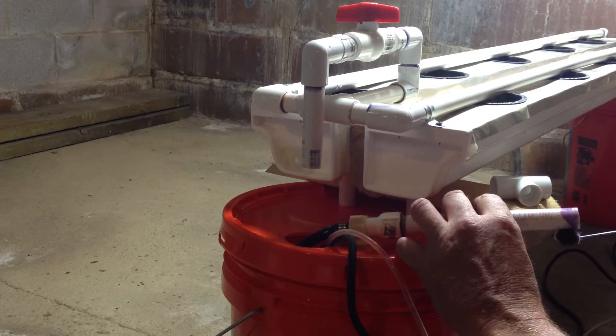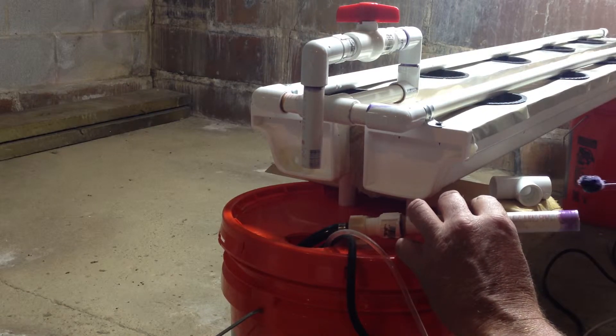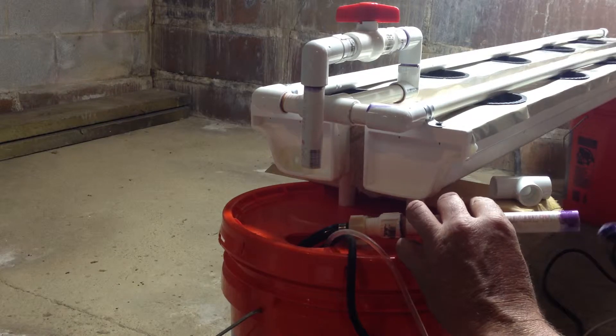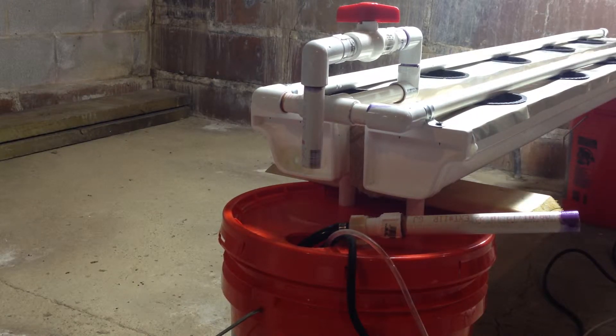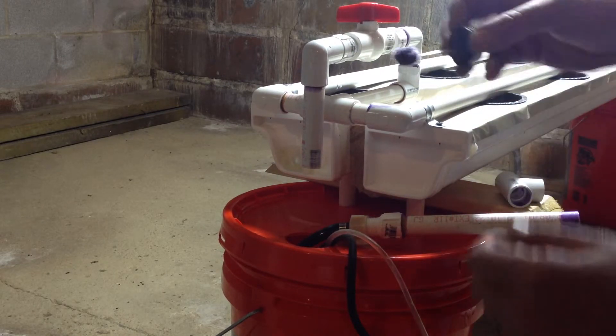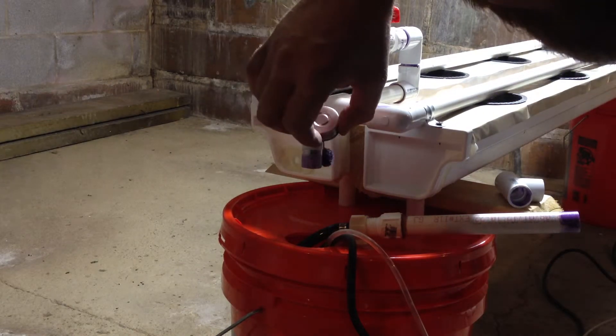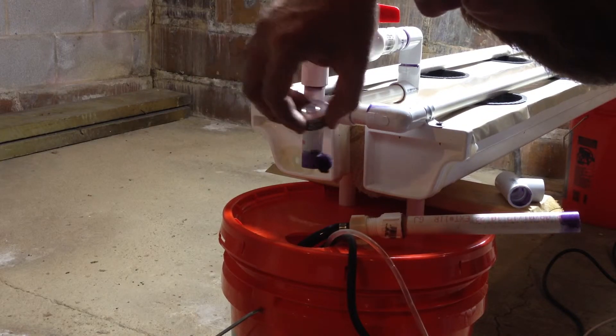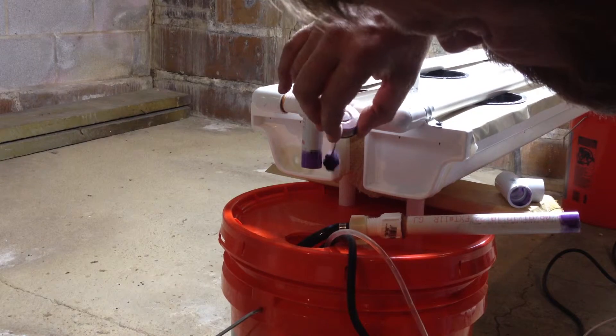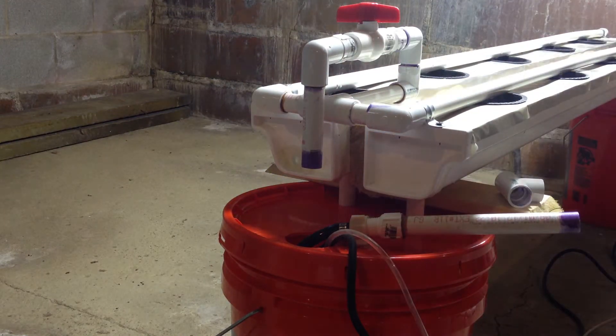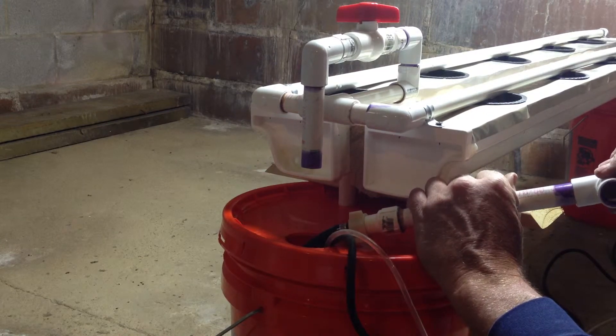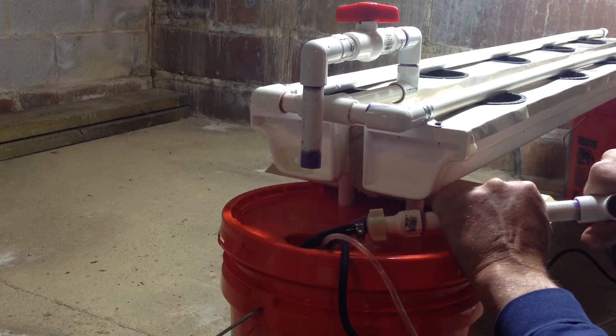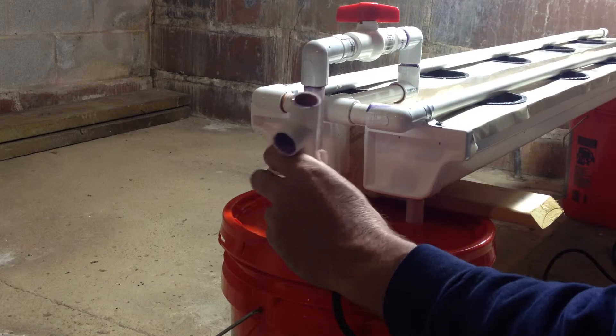Now we're going to apply primer to all the connections before we use any PVC cement on this. Here I am gluing the T into the lift tube. I want to get this all stabilized before I do anything else.